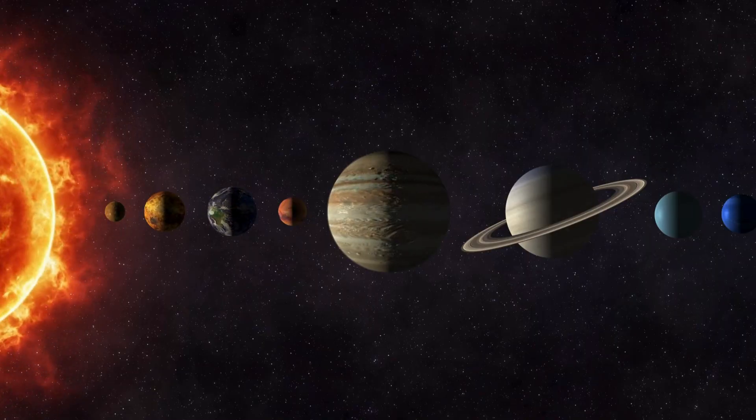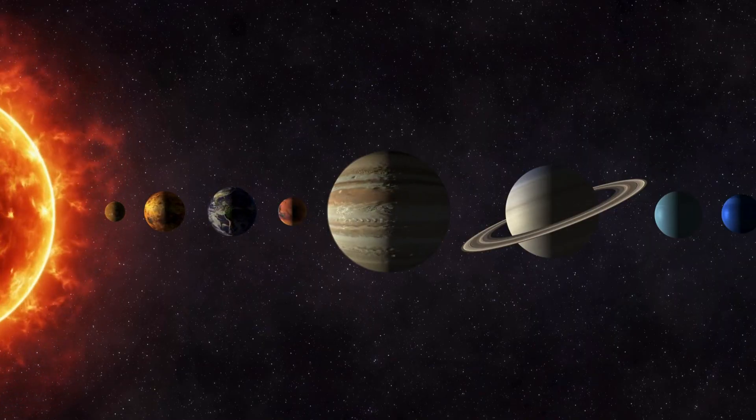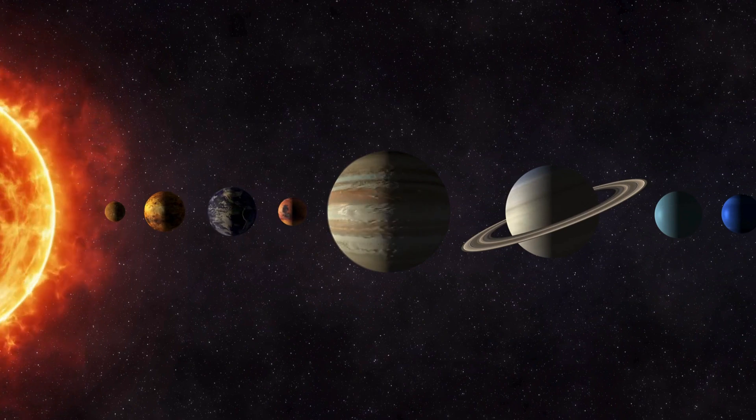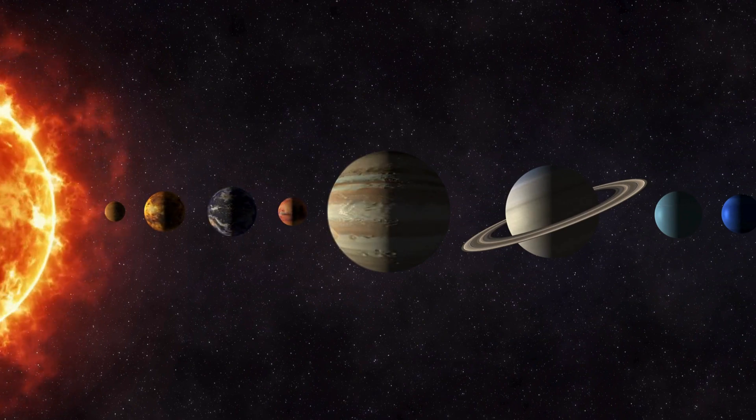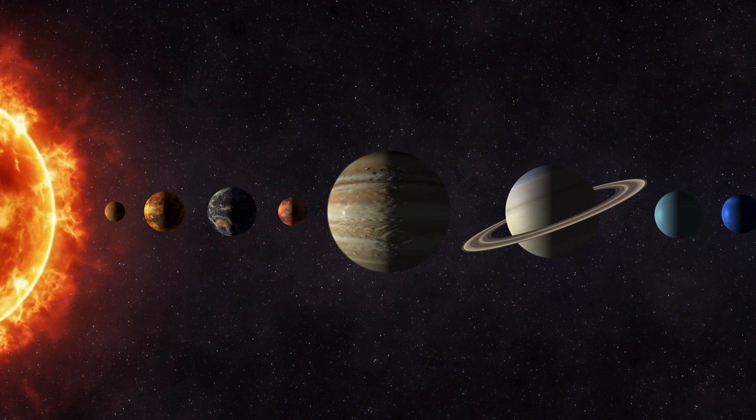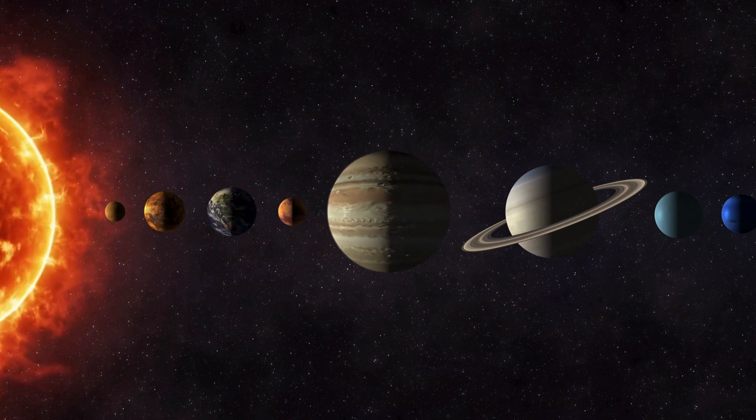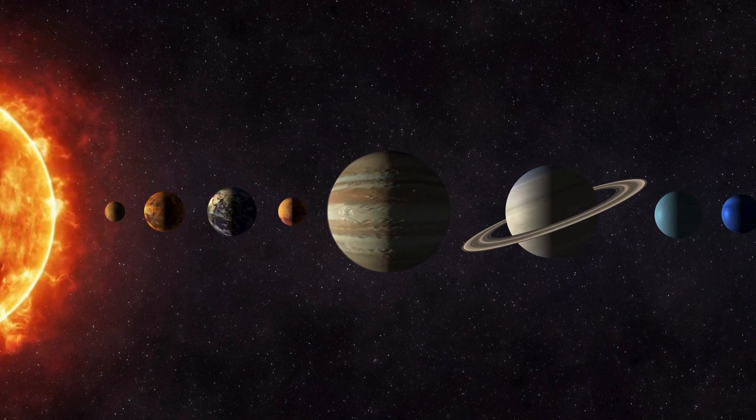There are eight planets in our solar system. Let's go ahead and list them, in order from the sun: Mercury, Venus and Earth, Mars, Jupiter, Saturn, Uranus and Neptune. These are the planets in the solar system.